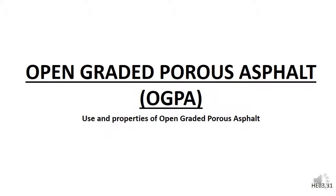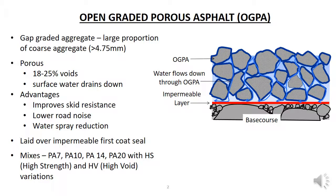In this video we will look at open graded porous asphalt, otherwise known as OGPA, in a little bit more detail. Open graded porous asphalt, or OGPA, is a gap graded mixture of fine and coarse aggregates. A gap grading means that it has normal proportions of fine and coarse particles, but much lower proportions of intermediate sized materials such as sands.